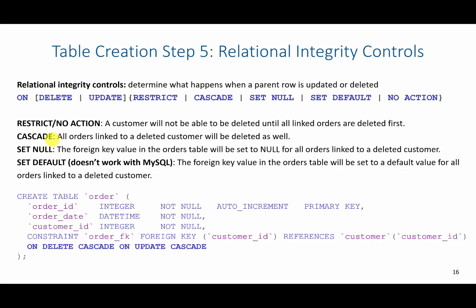Cascade, if I were to delete a customer, it would delete all the orders that are associated with that customer. Set null, if I were to delete a customer, it would set the foreign key values to null if that is possible in the table that referenced it. Now, if a foreign key column cannot be null, then this would fail just like the restrict no action.